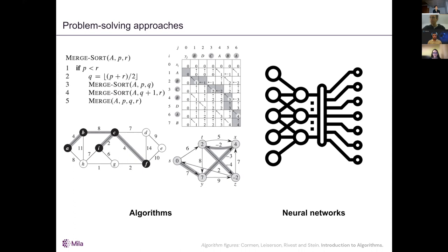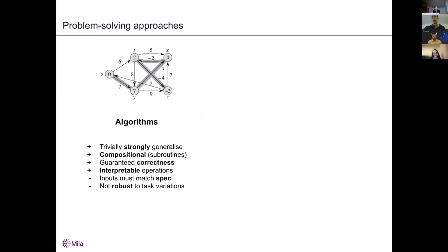These two approaches have different properties. Classical algorithms have several positive attributes: they generalize strongly — a graph algorithm will work no matter what type of graph you give it, regardless of size. Algorithms are also composable; it's very common to reuse algorithms we've already written to build new ones. Because they're written by hand, often with a correctness proof, we have guaranteed correctness. And the algorithm is interpretable.